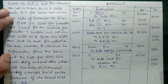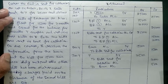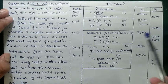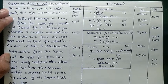So these are the two types of questions we covered today: when there are three parties with an endorsee as the third party, and when the bill is sent for collection to the bank. For both cases, we have seen how to post the entries and how to reverse them in case of dishonor.